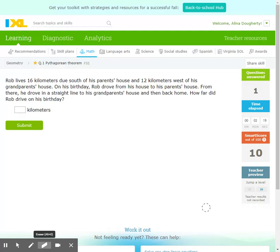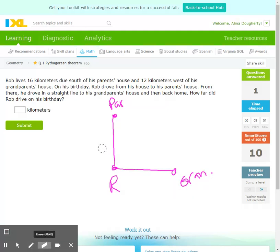Rob lives 16 kilometers due south of his parents' house and 12 kilometers west of his grandparents' house. So Rob lives south of his parents' house and west of his grandparents' house. So I made a mistake here. This needs to be a 16 and then 12 kilometers west of his grandparents' house.